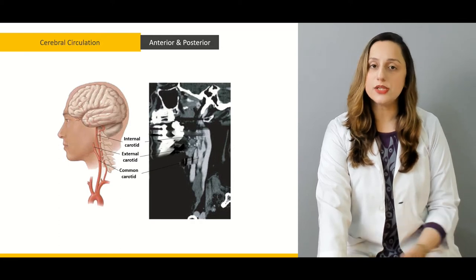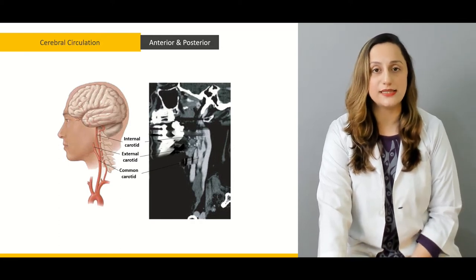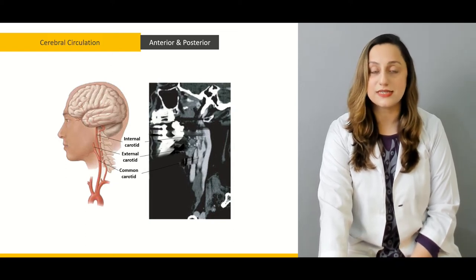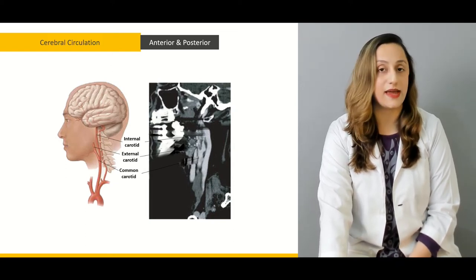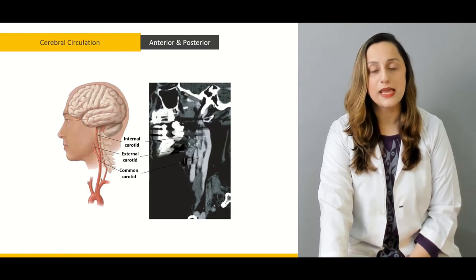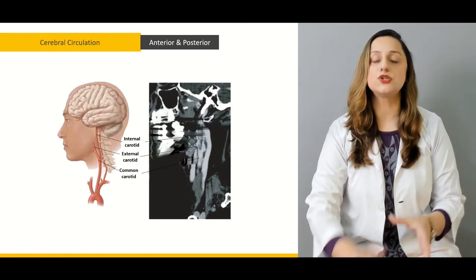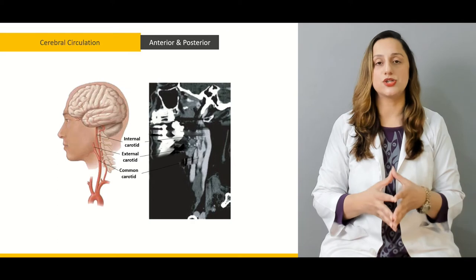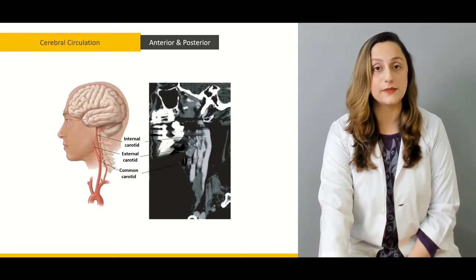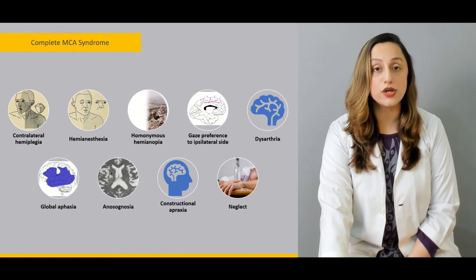We have background knowledge regarding the common carotid artery, which bifurcates into the internal carotid as well as the external carotid artery. Having known these two major arterial branches, we must know that thromboembolic events can take place in either of these important arterial circulations.